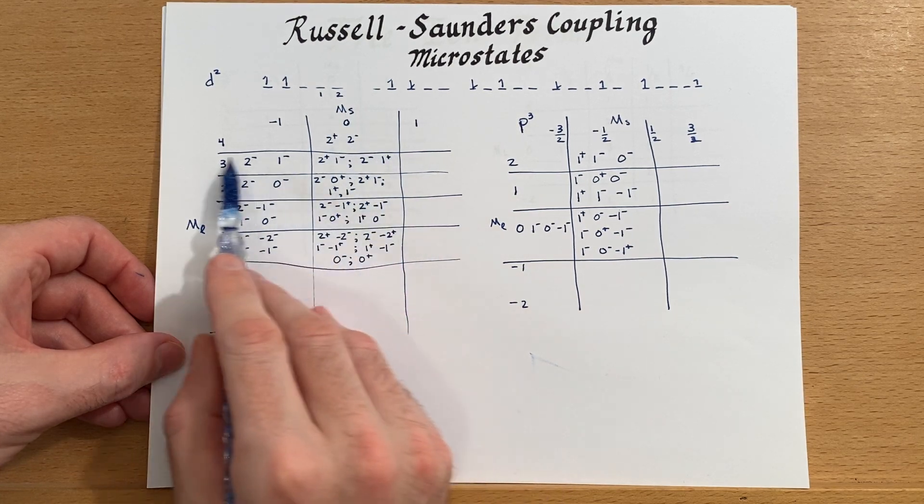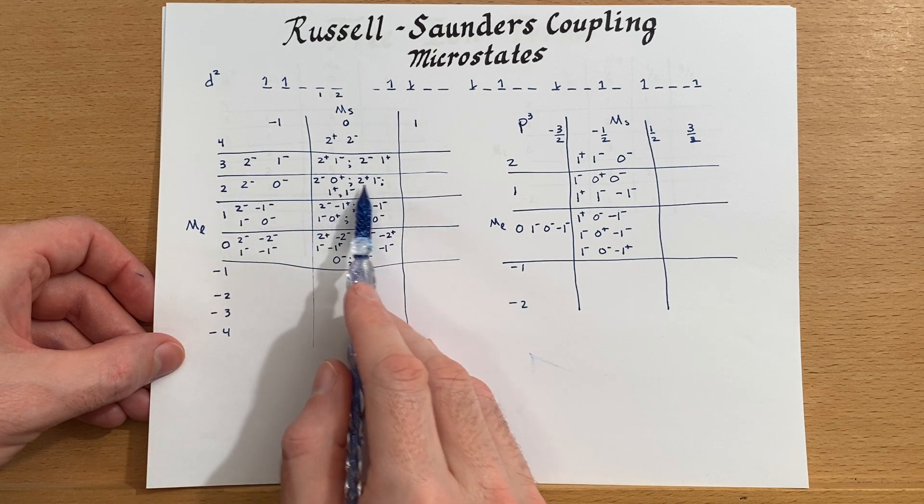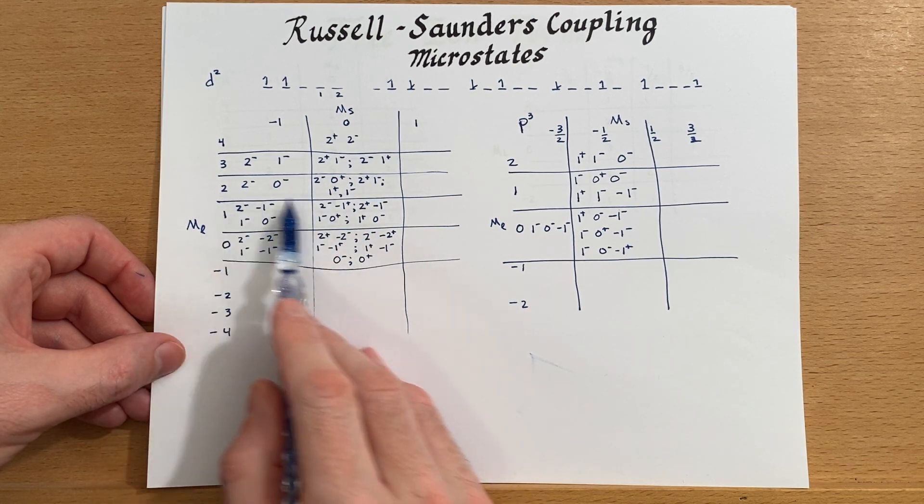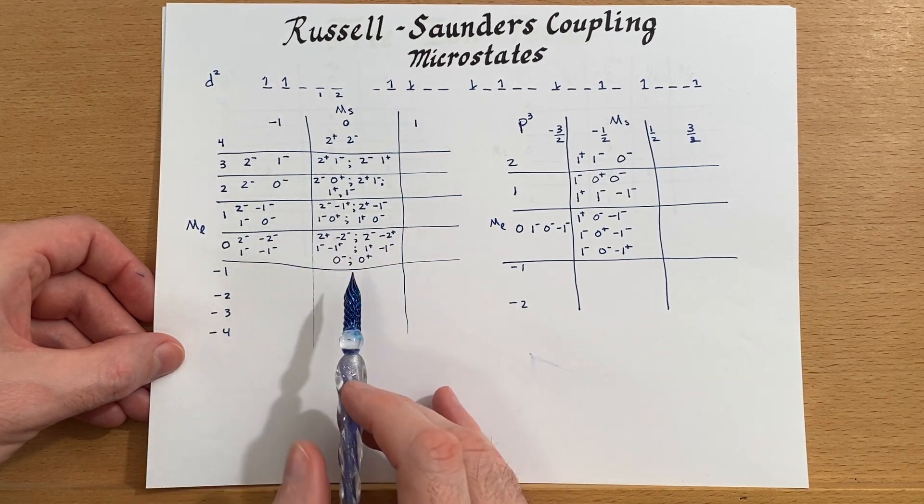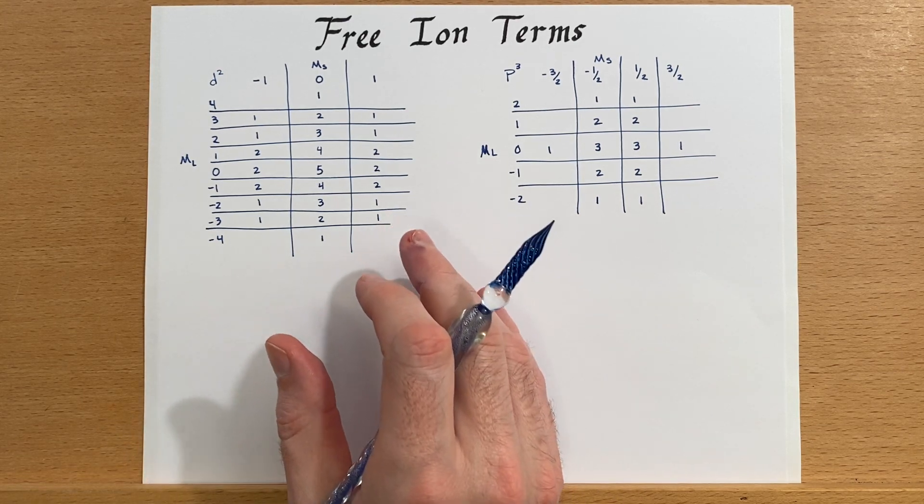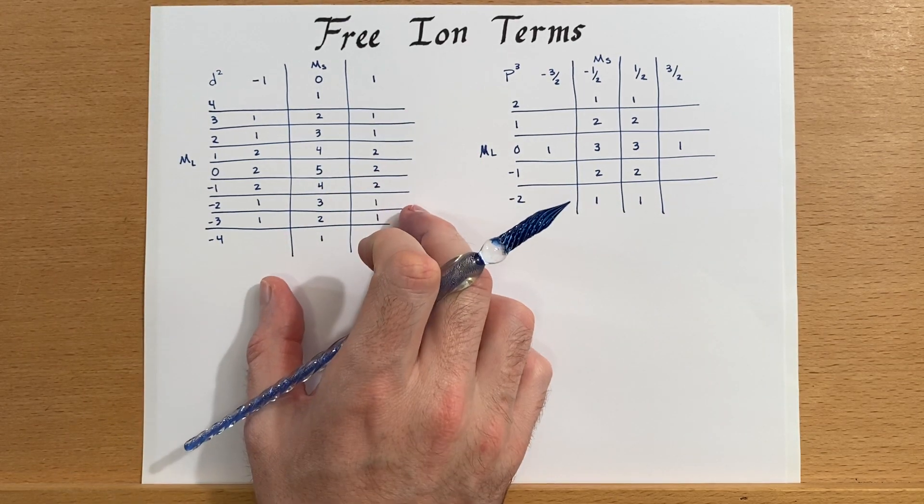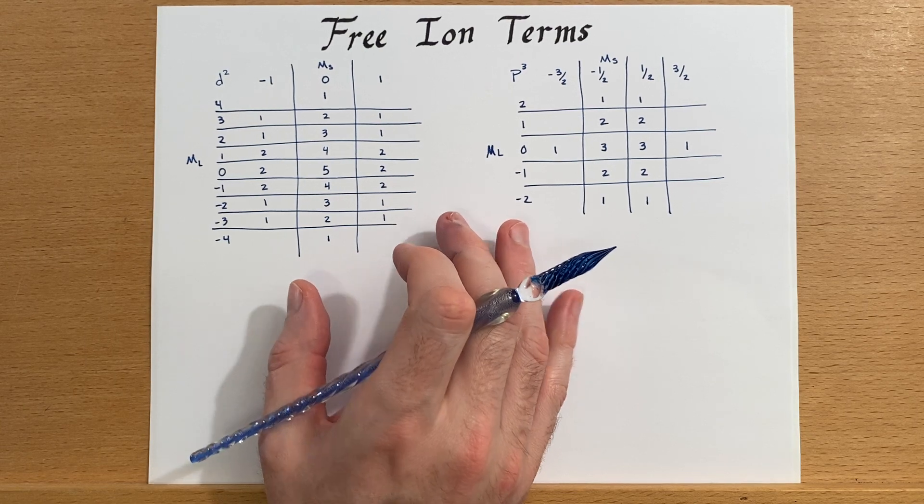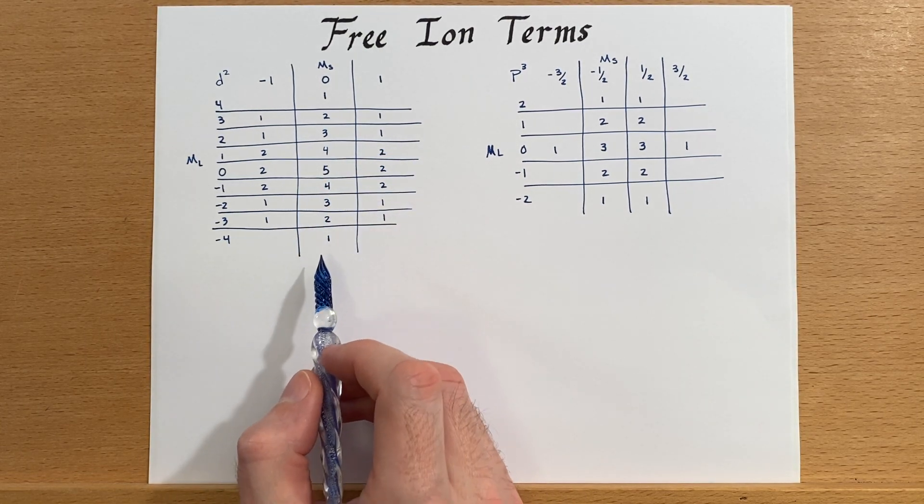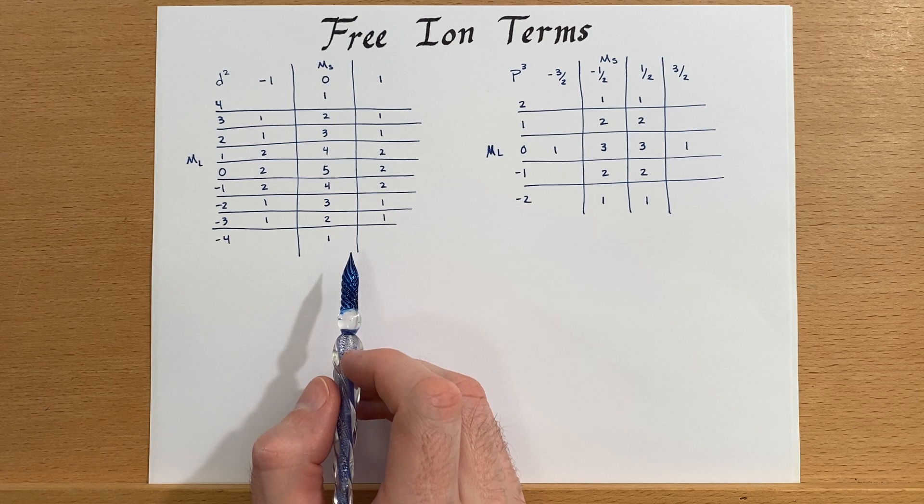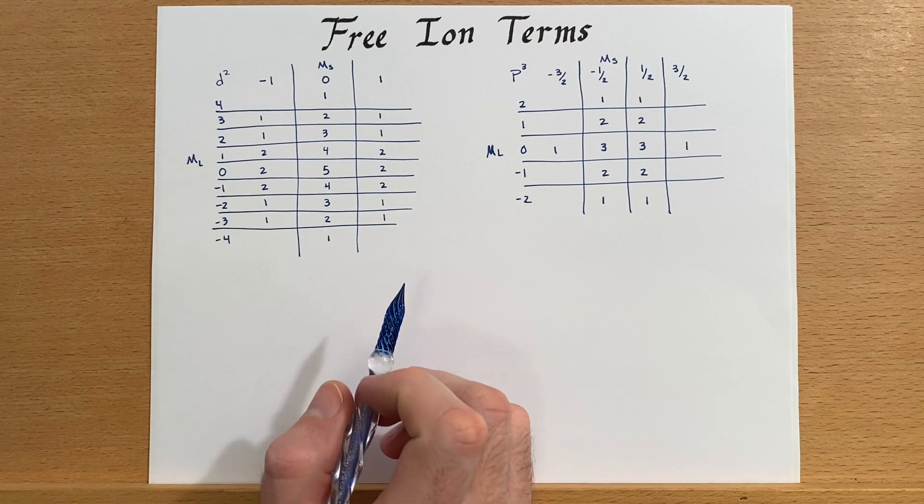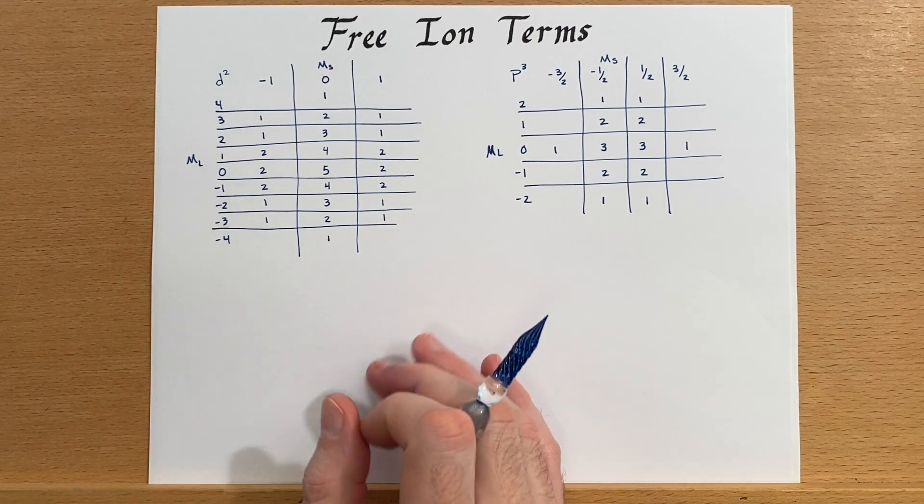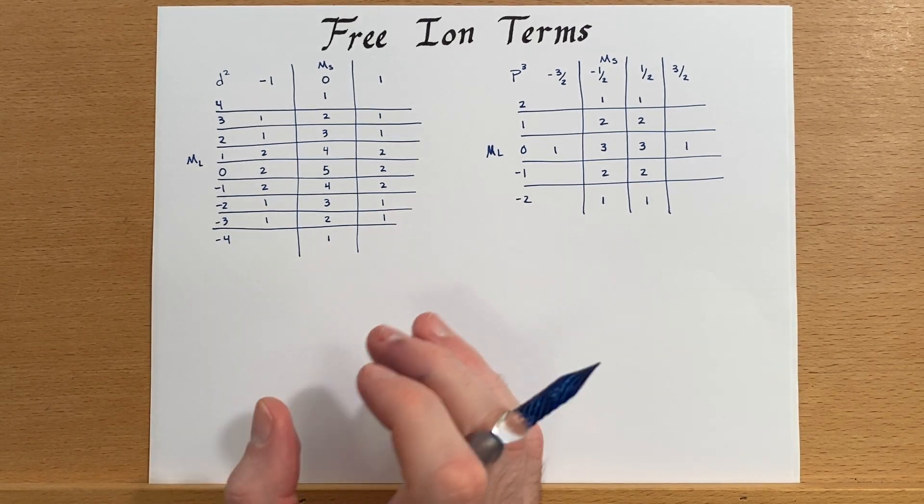There's two states for three and zero, three states for two, four states for one and zero, and five. So that has been now reduced to just simply this chart here where I've just written down the results of us determining all of those microstates. This will simplify what we're going to do next, which is pull out the free ion terms.